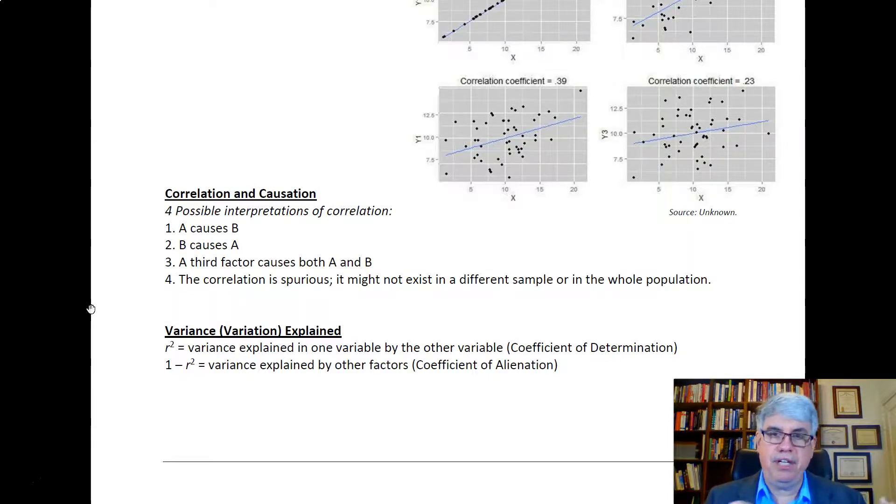We can say that 16 percent of the change in one variable is associated with the change in the other. For example, if we were looking at perceived organizational support and organizational commitment, and the correlation was 0.4, 16 percent of the variation of our outcome variable, organizational commitment, is associated with the perceived organizational support.